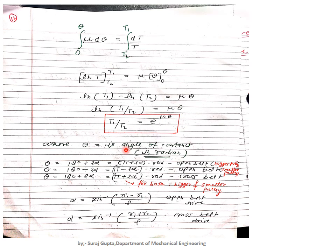Here θ is the angle of contact, and its relation to α is from the previous lecture. For open belt drive, α = sin⁻¹((r₁ − r₂)/L), and for cross belt drive, α = sin⁻¹((r₁ + r₂)/L). These formulas are used when finding the total length of the belt for the exact formula.